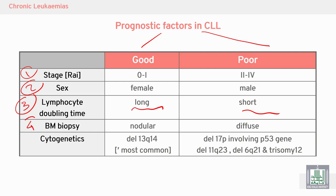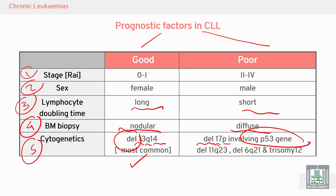Bone marrow biopsy pattern: if it is localized nodular, it is good; if it is diffuse, it is poor prognosis. Cytogenetics: deletion of part of chromosome 13q (long arm) is the most common chromosome abnormality and carries a good prognosis. Other conditions like deletion of chromosome 17p involving p53 carry poor prognosis.